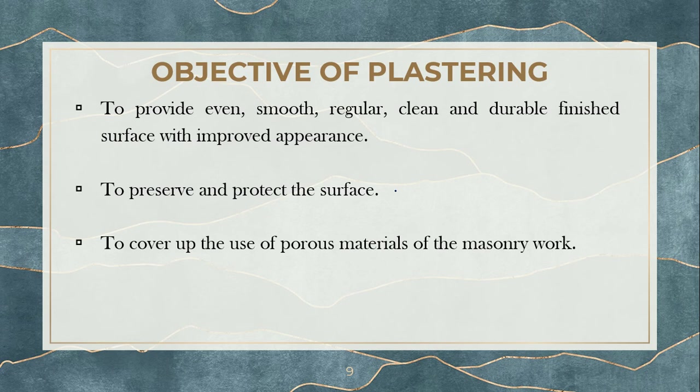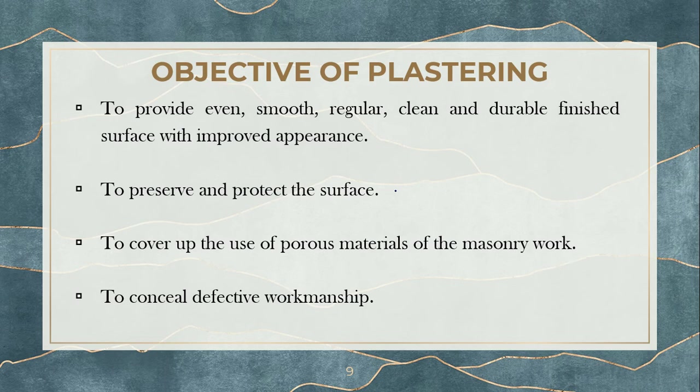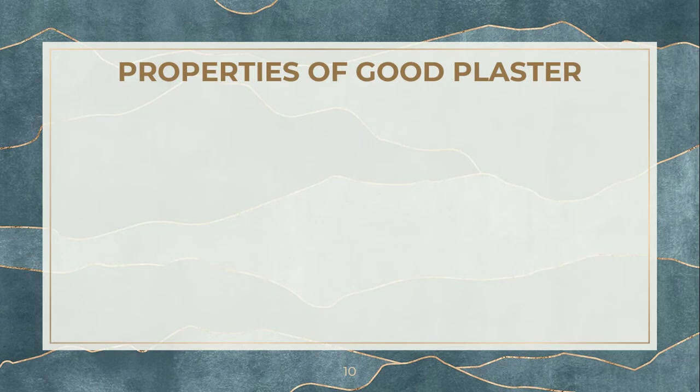Another objective is to cover up the use of porous materials in the masonry. If a brick wall is porous in nature, anything that falls on it will be absorbed easily, but something covering it obviously provides much better protection. Also, plastering helps to conceal defective workmanship — if there are broken bricks or cracks in the joints, you can cover those up using plastering.